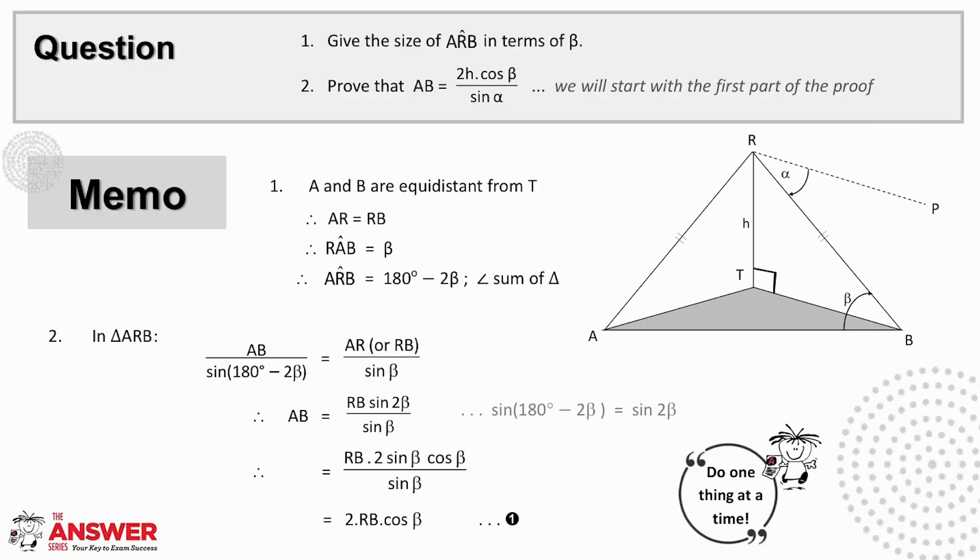In looking at the solution, the first thing to realize in order to be able to do the first part of the question is that because A and B are equidistant from T, this means that RA and RB are equal. And this then makes triangle RAB isosceles. Triangle RAB is this triangle formed from the top of the tower to points A and B.